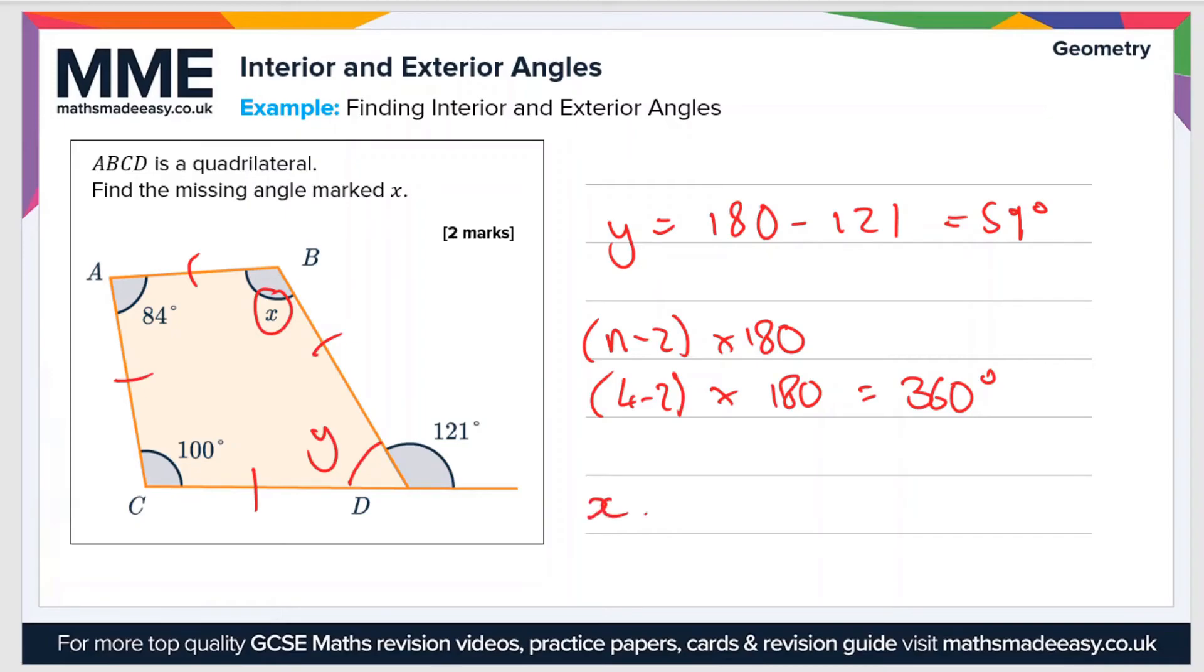So to find x, we just do 360 minus 84 minus 100 minus y, which is 59 degrees. So x equals 117 degrees.